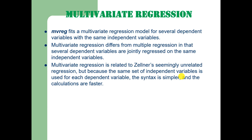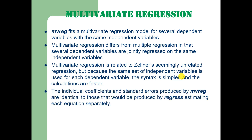Multivariate regression is related to Zellner's seemingly unrelated regression, but because the same set of independent variables is used for each dependent variable, the syntax is simple and the calculations are quicker and faster. The individual coefficients and standard errors produced by the mvreg command are identical to those that would be produced by the OLS regression command, estimating each equation separately.